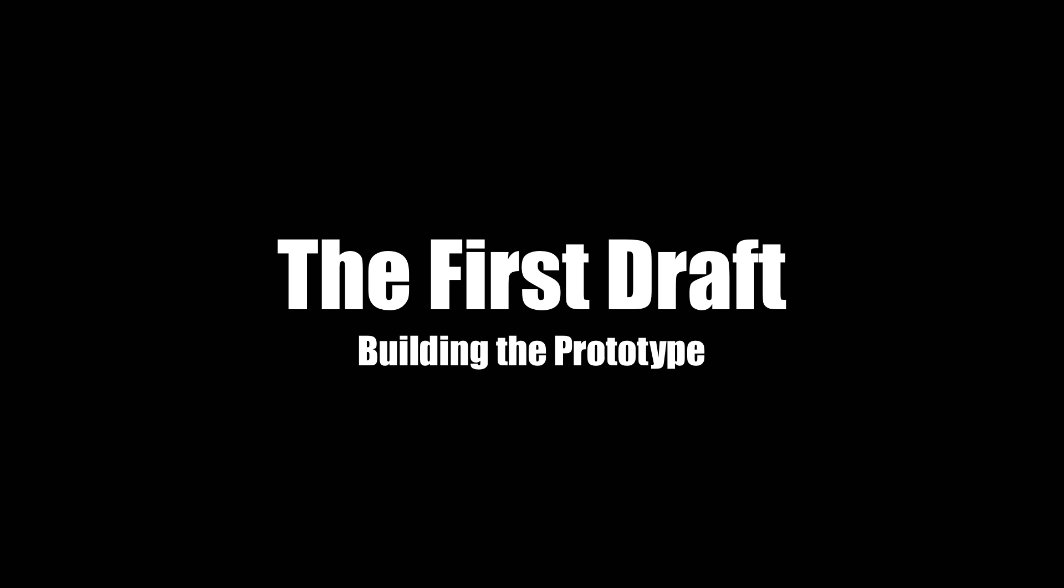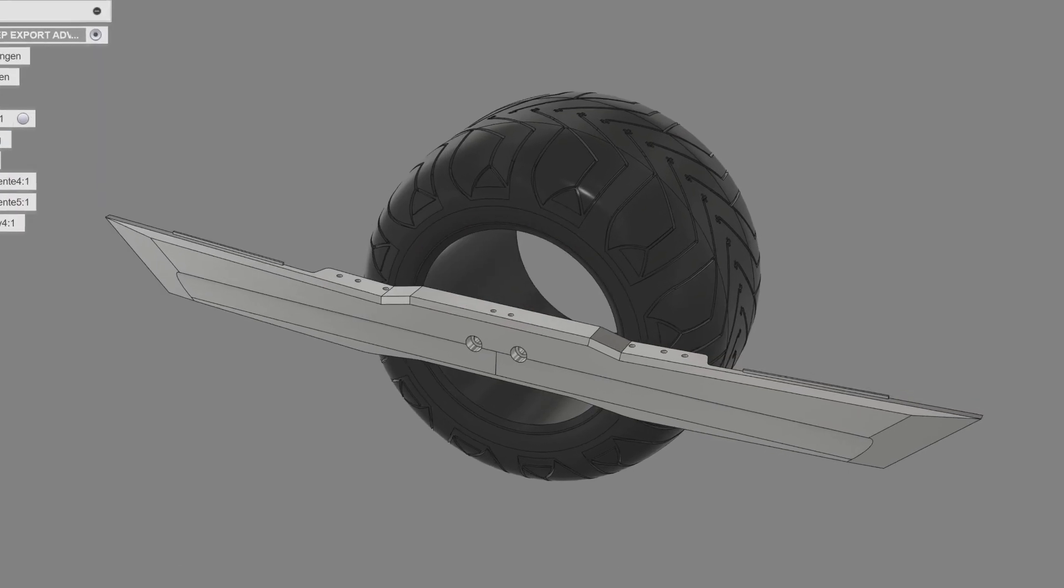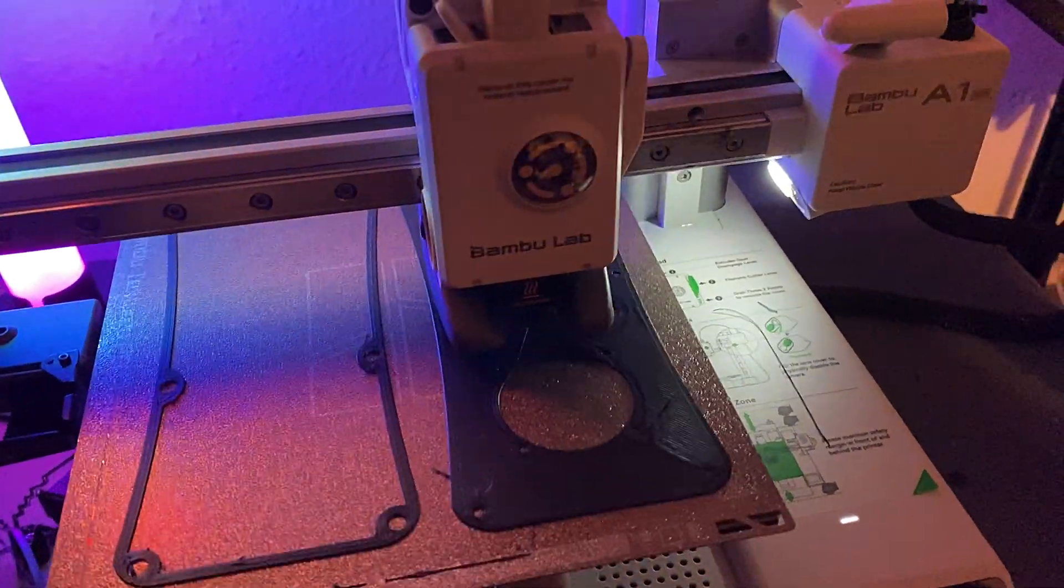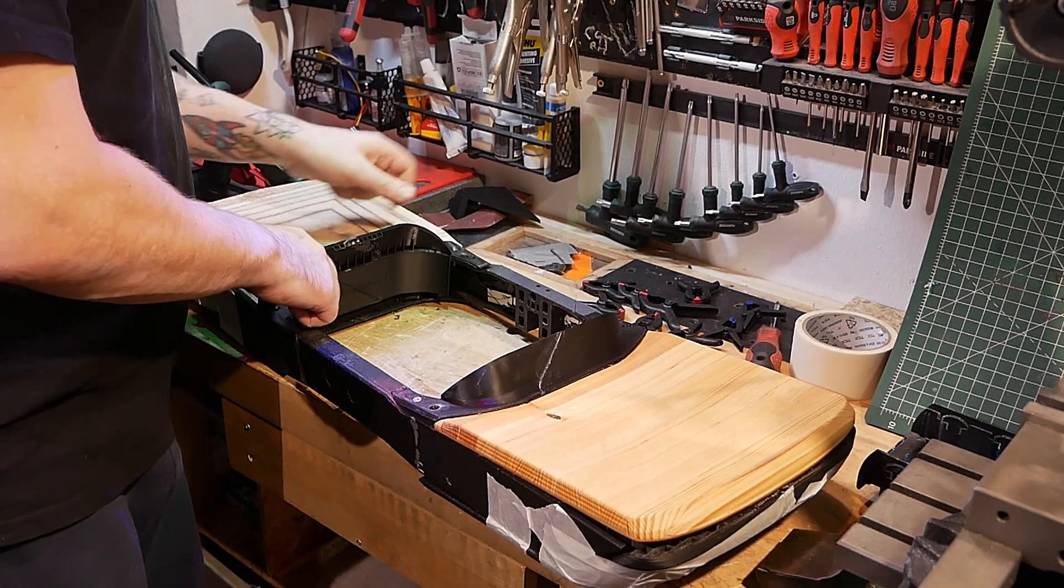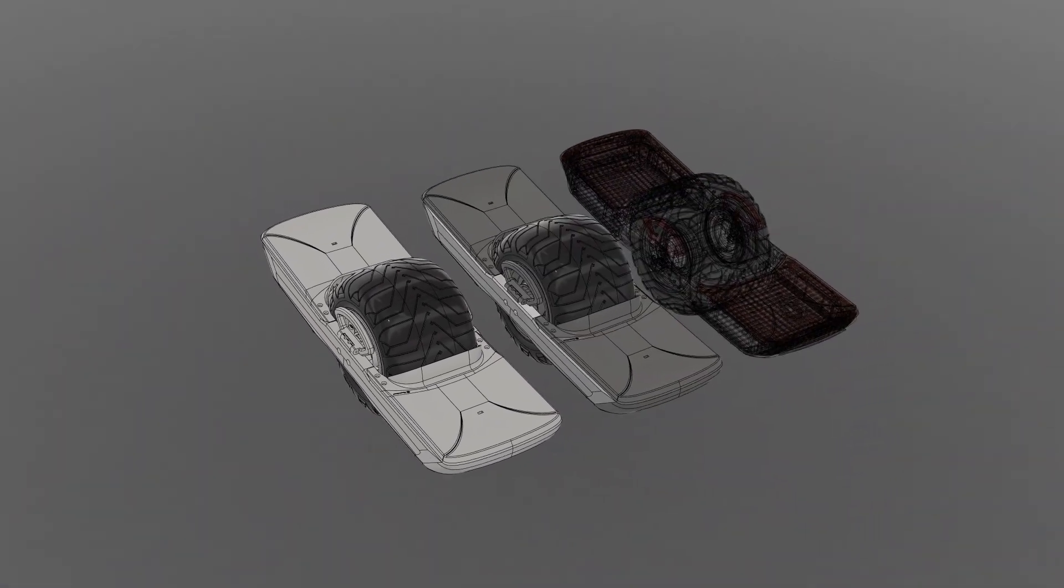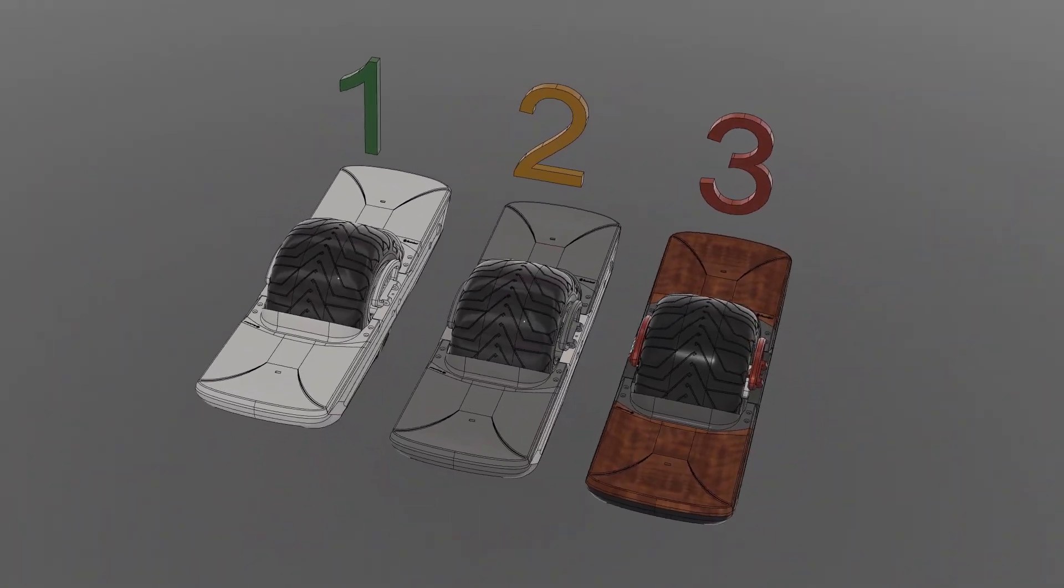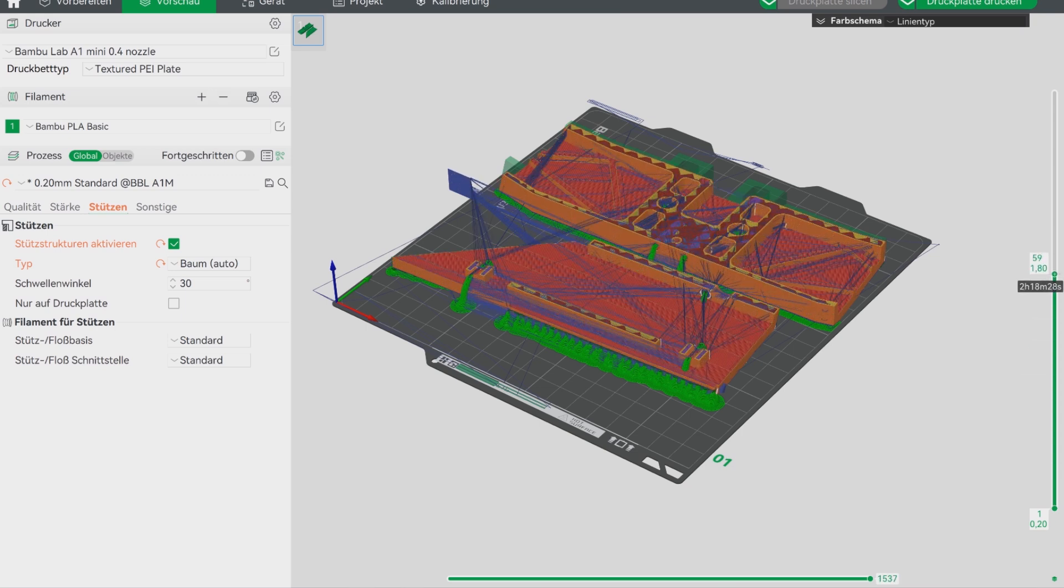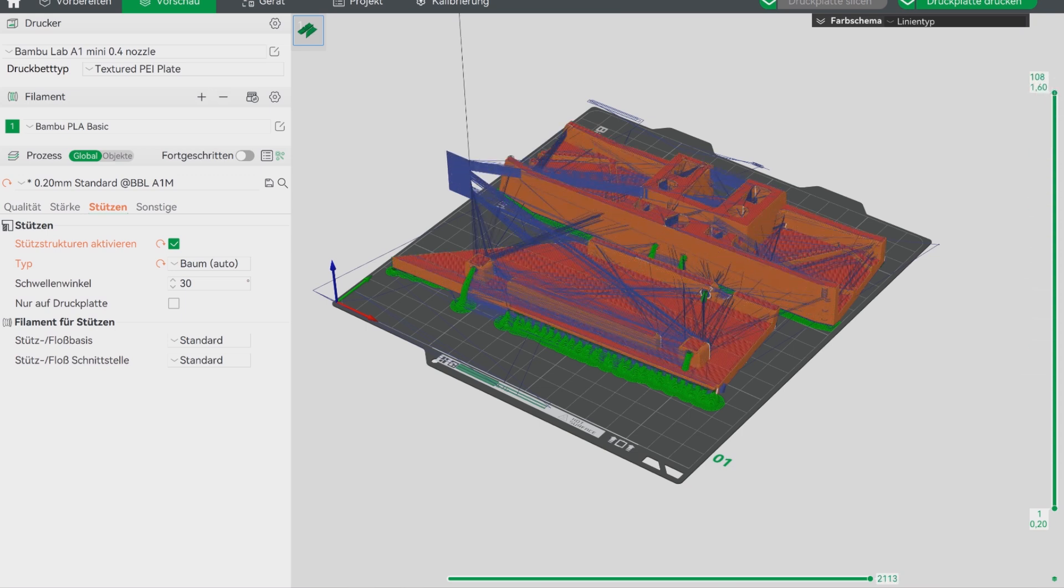I will start the project by 3D printing all the components using my A1 Mini and then building a prototype. This prototype will serve as a reference for developing my own version of the one-wheel later on. Since my A1 Mini is quite small, I need to print the parts in smaller sections and assemble them into a working prototype.